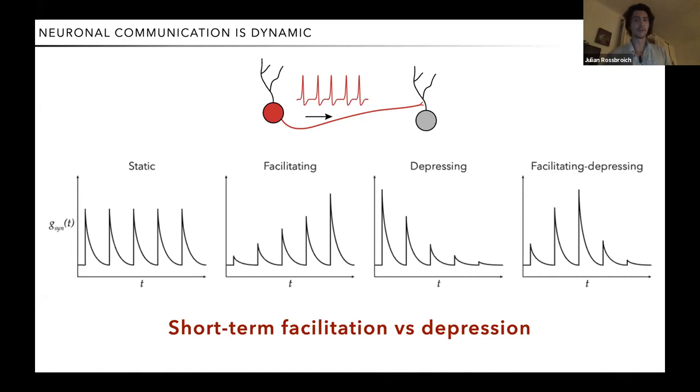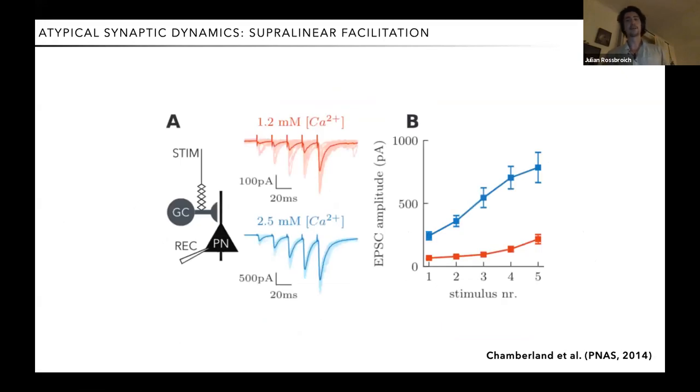But we were fundamentally motivated in this work by a few observations of experimental neuroscience that this dichotomy of facilitating and depression is not really that accurate. Just to give you an example, this is a paper from Simon Chamberlain from 2014 where he showed that at a specific synapse in the hippocampus, if you lower the extracellular calcium concentration, you don't only change the initial EPSC amplitude, but you also drastically change the time course of facilitation from this more classical sublinear time course to a supralinear facilitation. And findings like this challenge this traditional dichotomous view and suggest there is something more to the story.